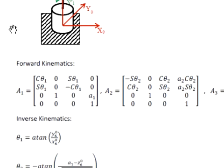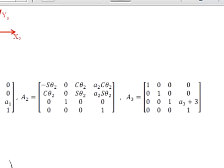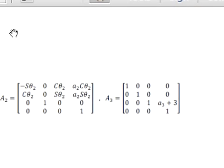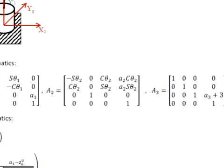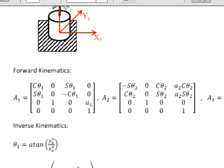In A2, this is the rotation matrix from frame 1 to frame 2. And in A3, this is the rotation matrix from frame 2 to frame 3.